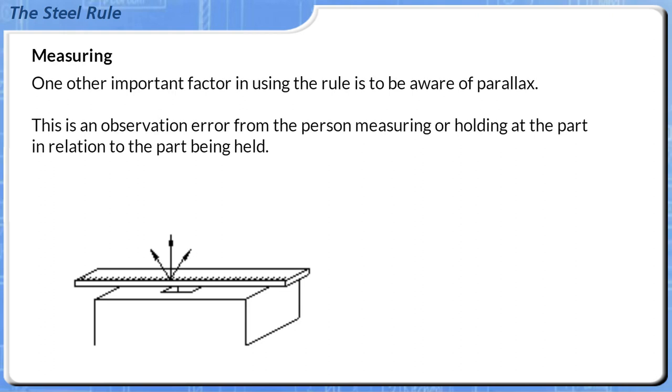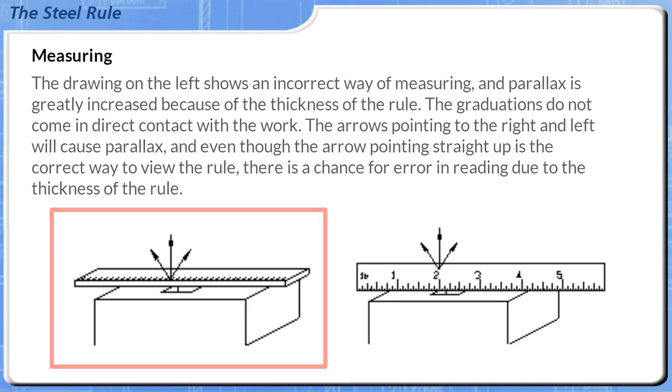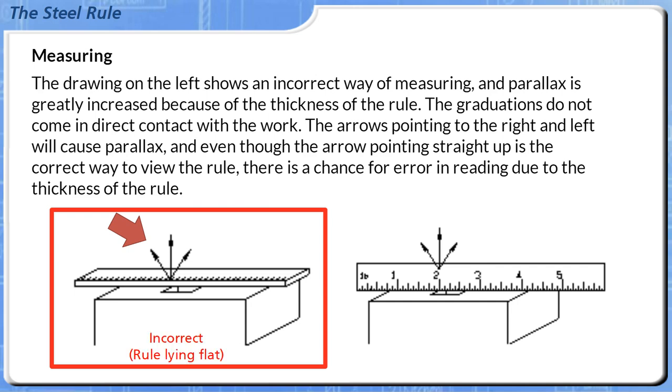One other important factor in using the rule is to be aware of parallax. This is an observation error from the person measuring or reading the part in relation to the part being held. The drawing on the left shows an incorrect way of measuring, and parallax is greatly increased because of the thickness of the rule. The graduations do not come in direct contact with the work. The arrows pointing to the right and left will cause parallax, and even though the arrow pointing straight up is the correct way to view the rule, there is a chance for error in reading due to the thickness of the rule.